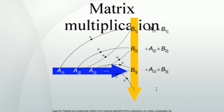For large matrices and/or products of more than two matrices, this matrix product can be very time-consuming to calculate, so more efficient algorithms to compute the matrix product than the mathematical definition have been developed. This article will use the following notational conventions: matrices are represented by capital letters in bold, vectors in lowercase bold, and entries of vectors and matrices are italic, since they are scalars. Index notation is often the clearest way to express definitions, and will be used as standard in the literature.